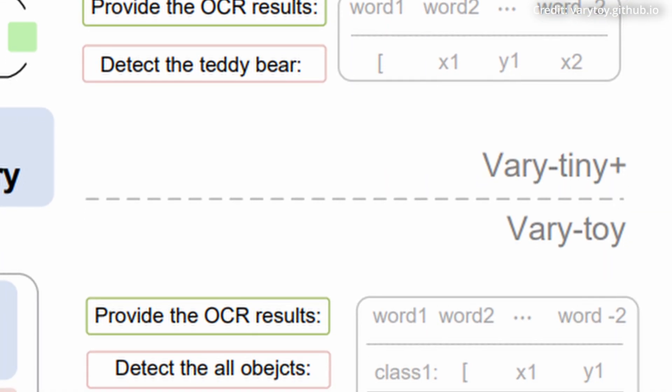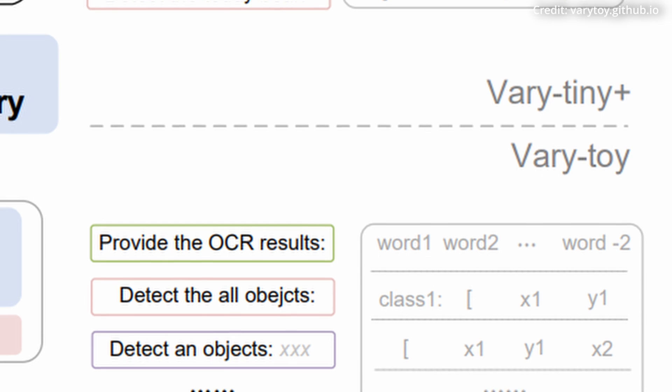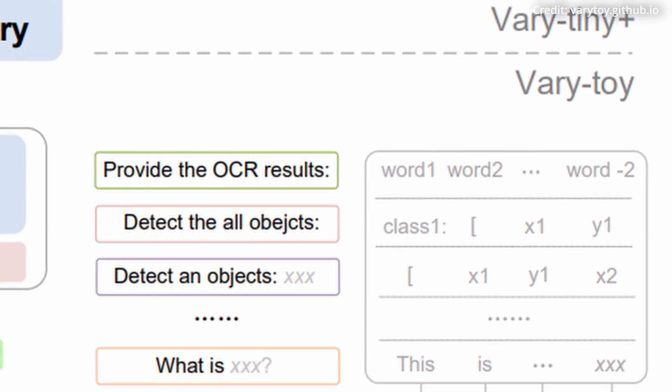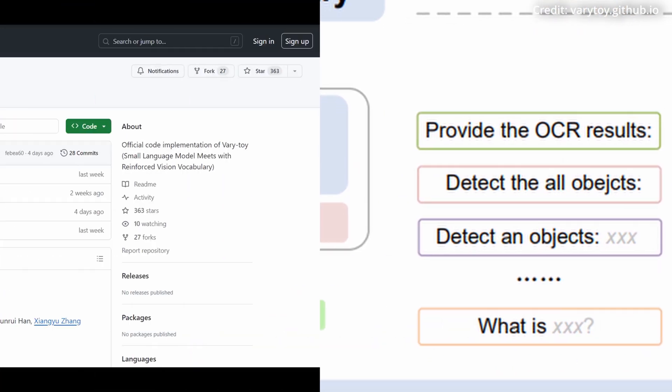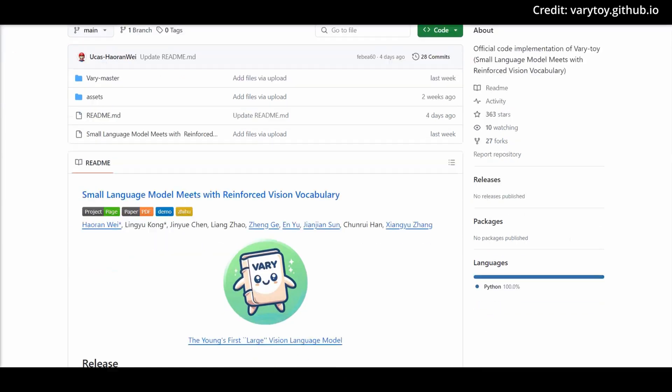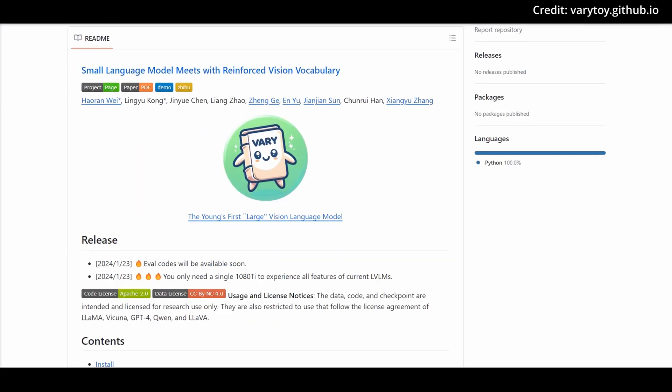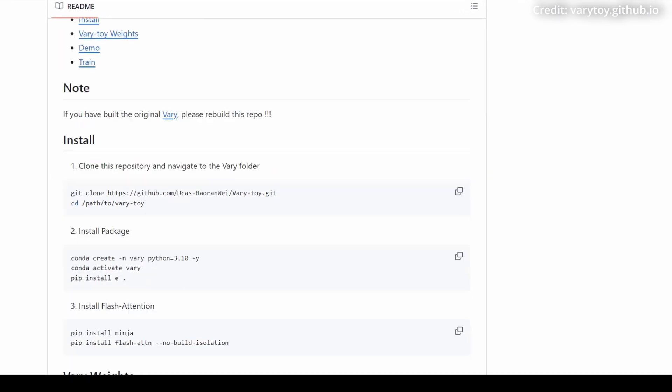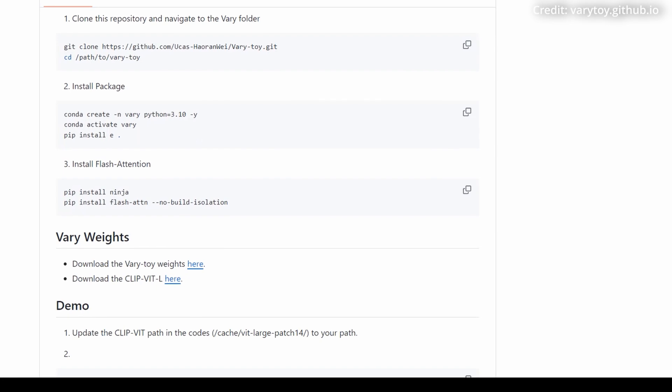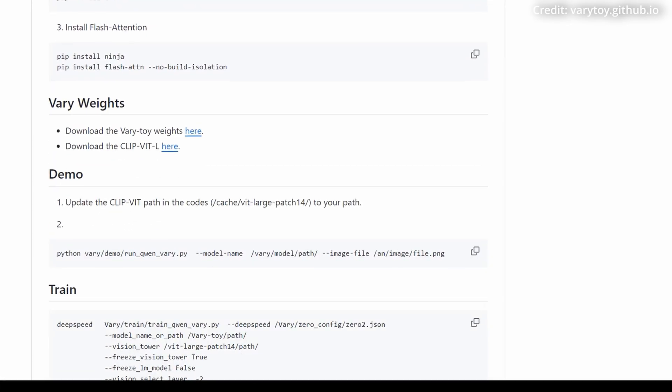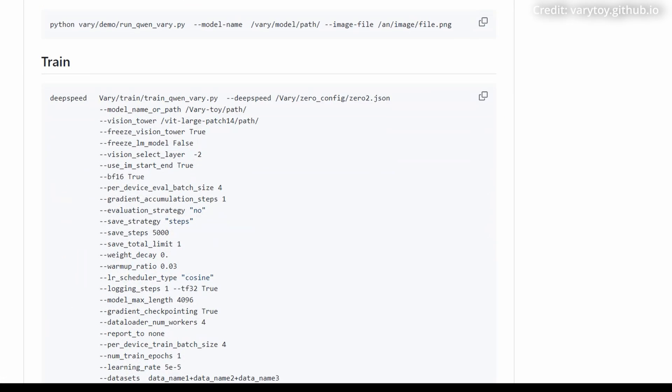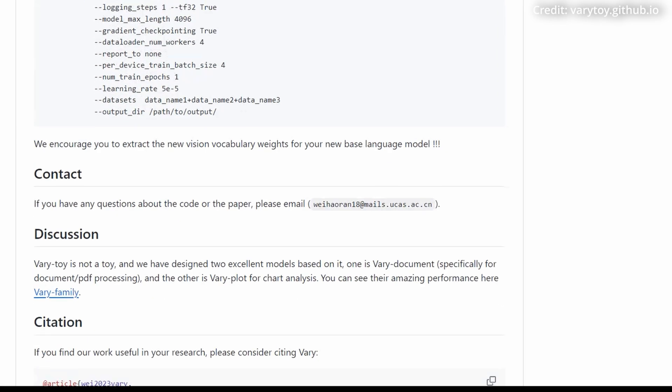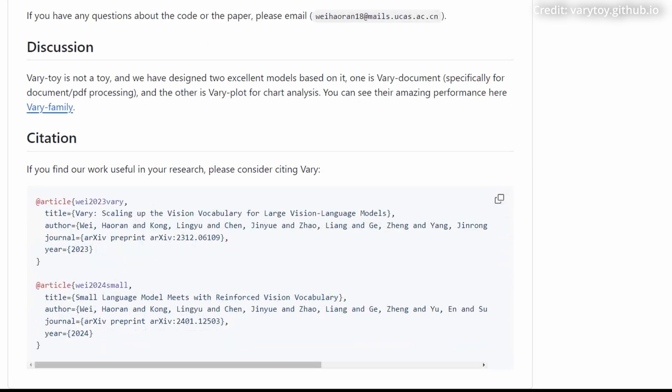Most of all, VariToy stands out with its innovative approach to scaling up the vision vocabulary for large vision language models. It involves training a new visual vocabulary network using a smaller auto-regressive model, such as Op125M, and integrating it with the existing vocabulary. VariToy's compact size not only makes it a potent tool in the large vision language model landscape, but also offers an accessible solution for researchers with limited resources.